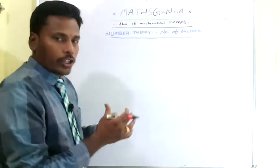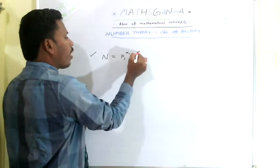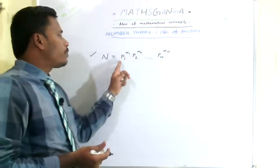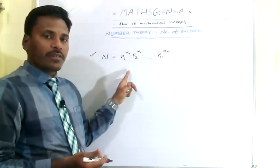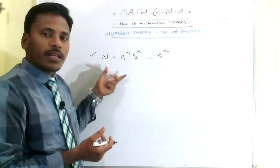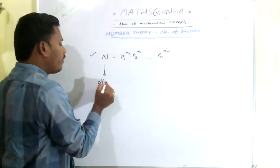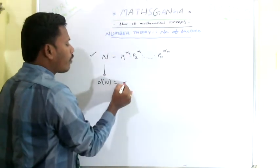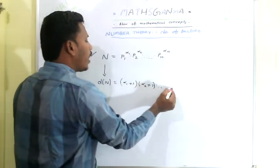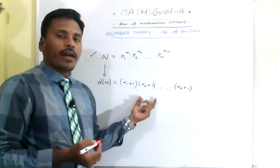The formula we mentioned in the last video: if we have a number n whose prime factorization is p1 to the power alpha1, p2 to the power alpha2, and so on pn to the power alpha n — where p1, p2 and pn are the prime bases and alpha1, alpha2 and so on alpha n are the powers — then the number of factors is (alpha1 + 1)(alpha2 + 1)...(alpha n + 1). This is the rule and formula to find the number of factors for a given number.